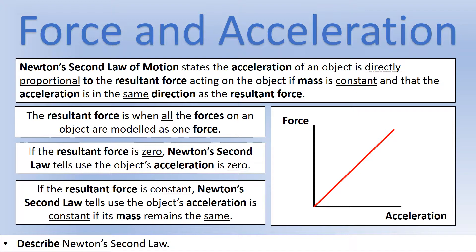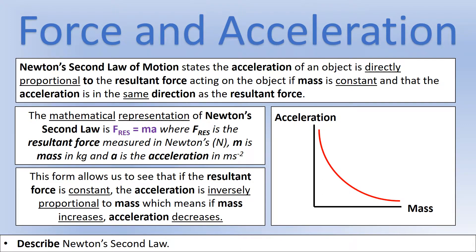We can represent Newton's second law mathematically. It's normally written as F = ma, where F stands for resultant force, m for mass, and a for acceleration. From this, if we have a constant resultant force, the acceleration and mass are inversely proportional — the bigger the mass, the smaller the acceleration we get — and we would get a curve on a graph for constant resultant force.